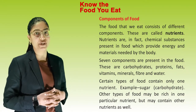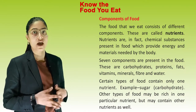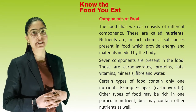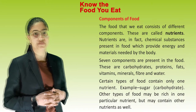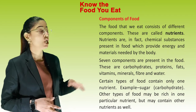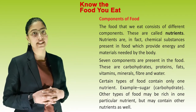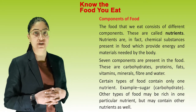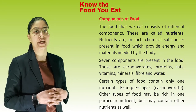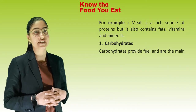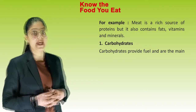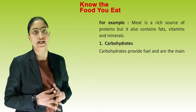Seven components are present in the food. These are carbohydrates, proteins, fats, vitamins, minerals, fibres and water. Certain types of food contain only one nutrient — for example, sugar contains carbohydrates. Other types of food may be rich in one particular nutrient but may contain other nutrients as well. For example, meat is a rich source of protein but it also contains fats, vitamins and minerals.